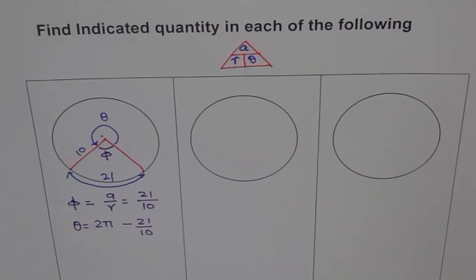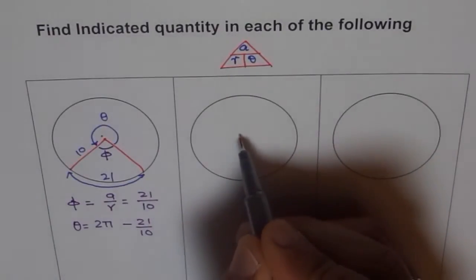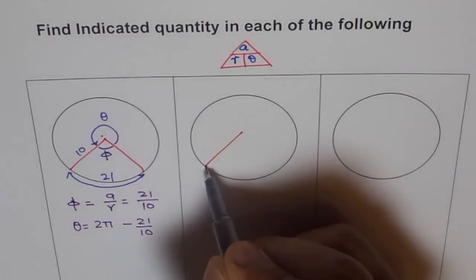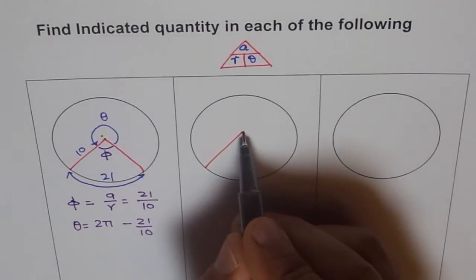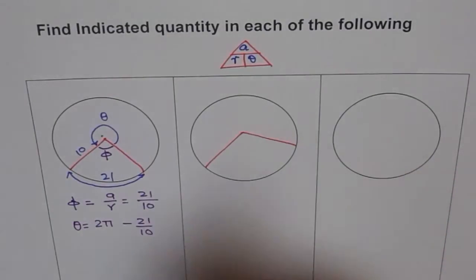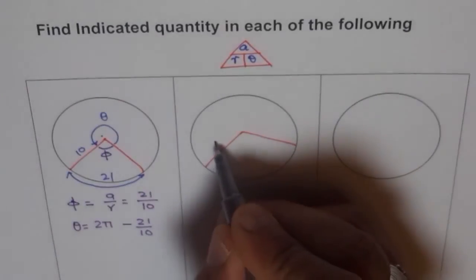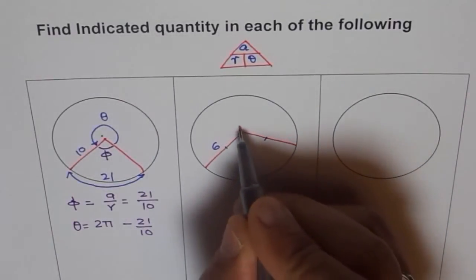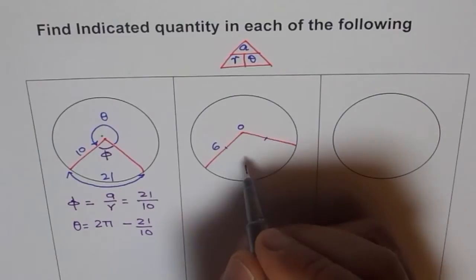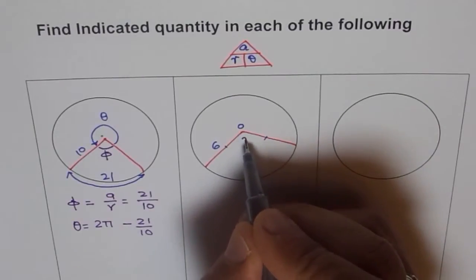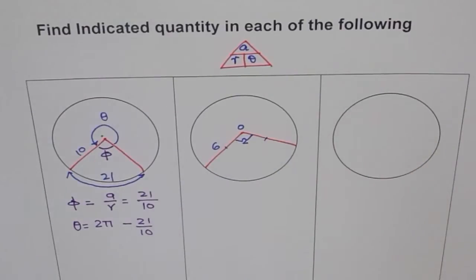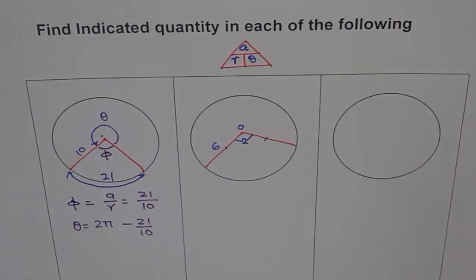Now in the next case, what we will do is, this time, we will try to find A, the arc length. So let us say this is our circle. And here, we are given the radius, which is, this is 6 units. This is my radius. That's my center. And we are given the angle. And angle is 2. We need to find A.